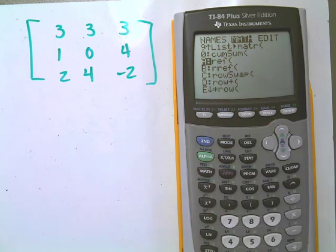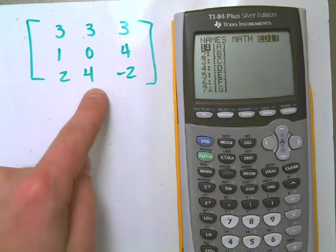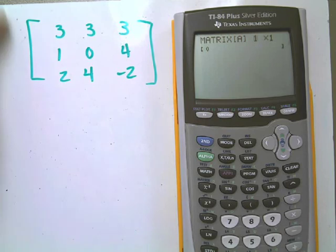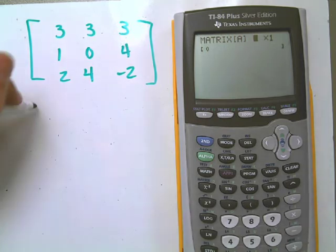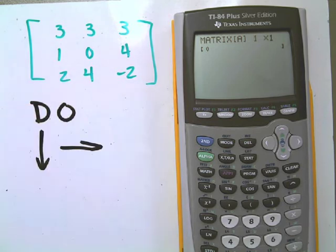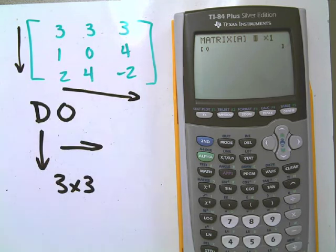So what we can do then is we're going to go over to the edit menu and we're going to edit a matrix. The first thing we need to do is actually put this matrix here into our calculator. So I hit enter. This is a three by three matrix. If you ever have trouble remembering that, remember the memory device we talked about in class: down and over, DO. So I go three down, three over. This is a three by three matrix.